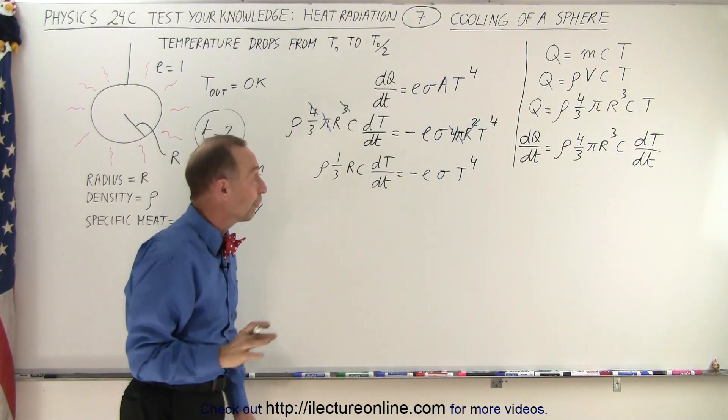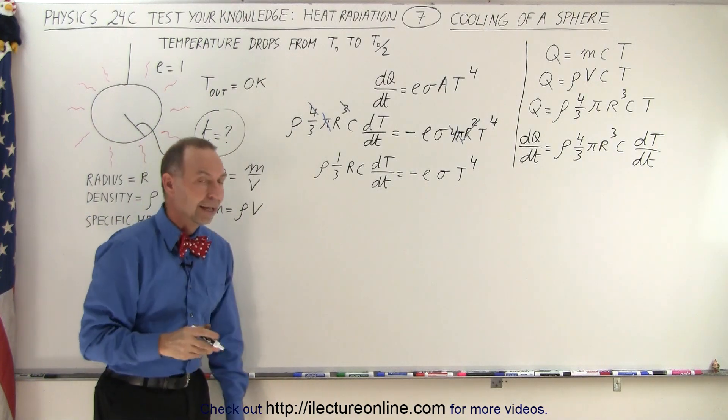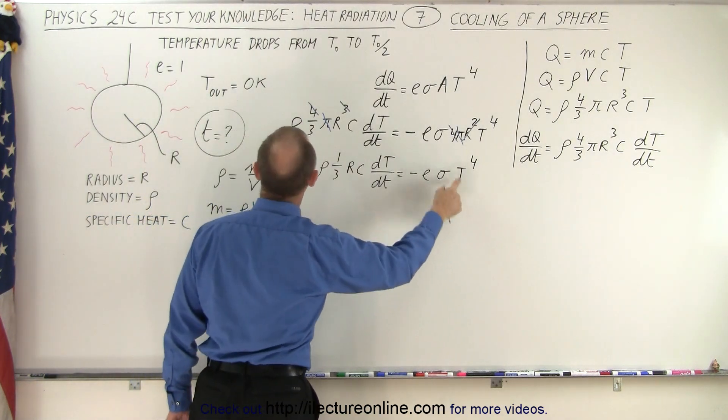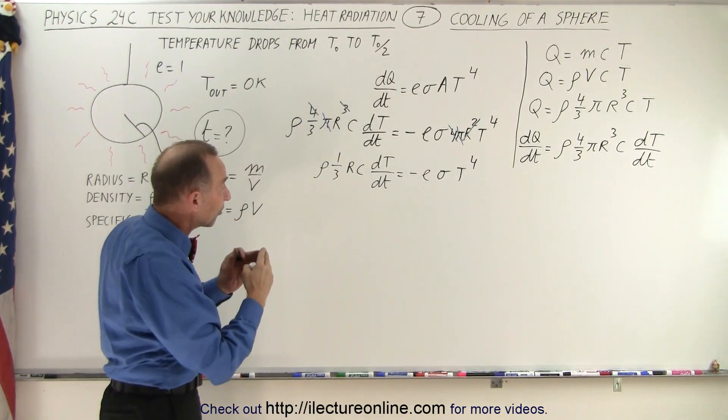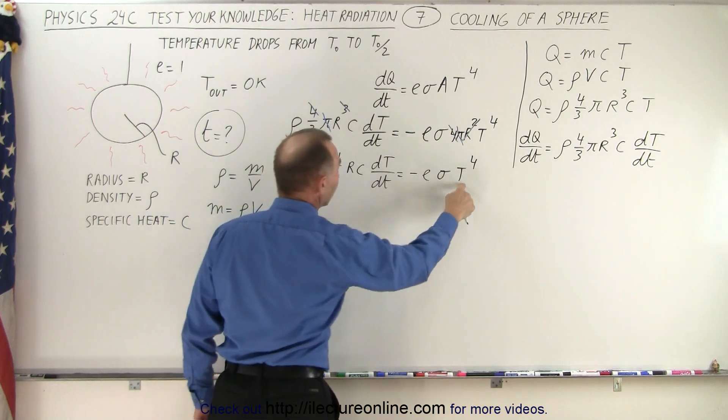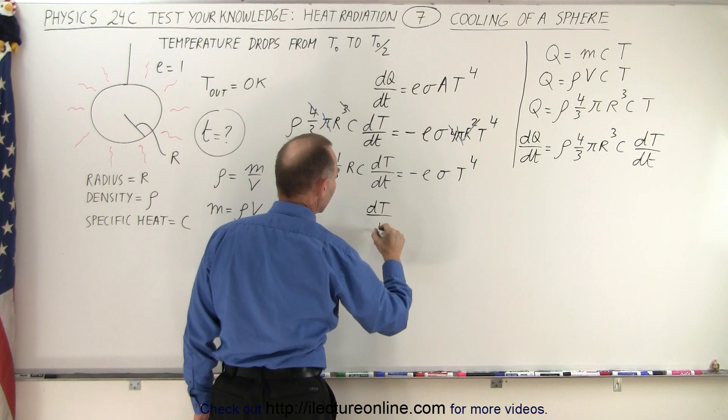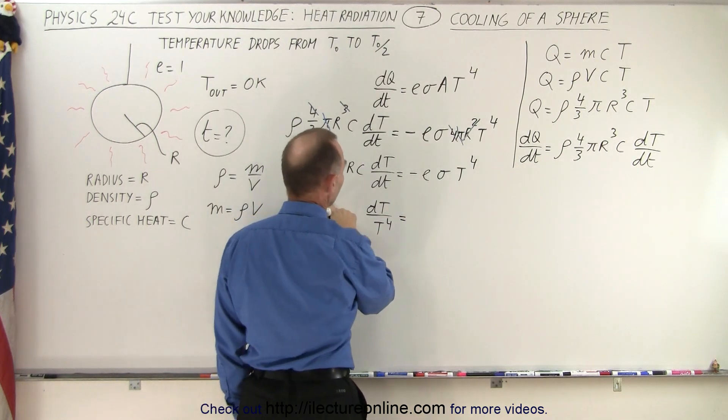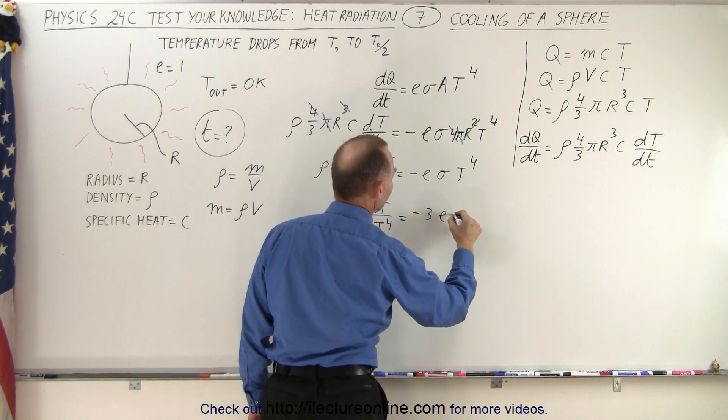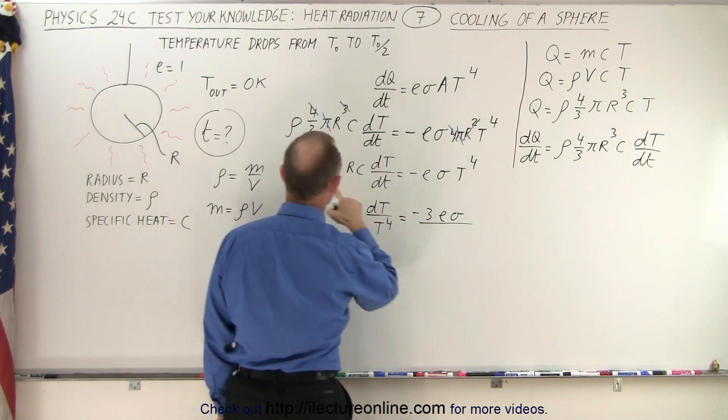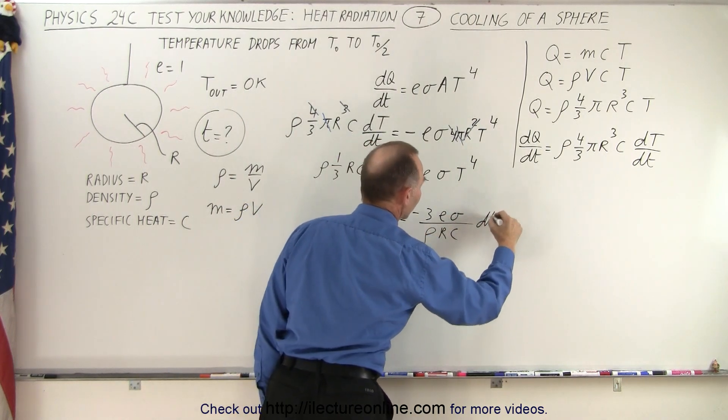So what are we looking for again? Because sometimes it helps to keep track of what we're looking for. We're looking for the time when temperature changes from some initial to some final temperature. That means we're going to have to separate the variables. We bring T over here, the dT over there. So we end up with dT/T⁴ equals, the 3 goes over here, so -3εσ divided by ρRC, and then we get the dt over here.